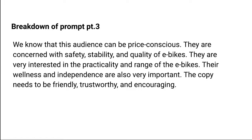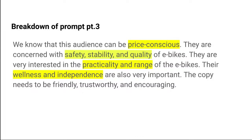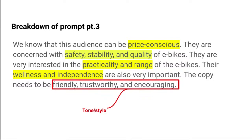Third part: 'We know this audience can be price conscious; they're concerned with safety, stability, and quality of e-bikes; they're very interested in practicality and range; their wellness and independence are also very important. The copy needs to be friendly, trustworthy, and encouraging.' These concepts — price-conscious, safety, stability, quality, practicality, range, wellness, and independence — are what we'd have drawn from asking ChatGPT up front. The themes in our prompting approach: what role should the AI take, what tone, who is the intended audience, and what's the shape of the content.